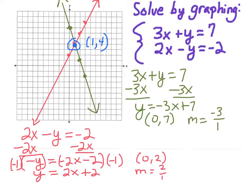Let's verify that (1, 4) works in both equations. For the first: 3 times 1 plus 4 equals 3 plus 4, which is 7. For the second: 2 times 1 minus 4 equals 2 minus 4, which is negative 2. Both check out, so (1, 4) is the solution to this system.